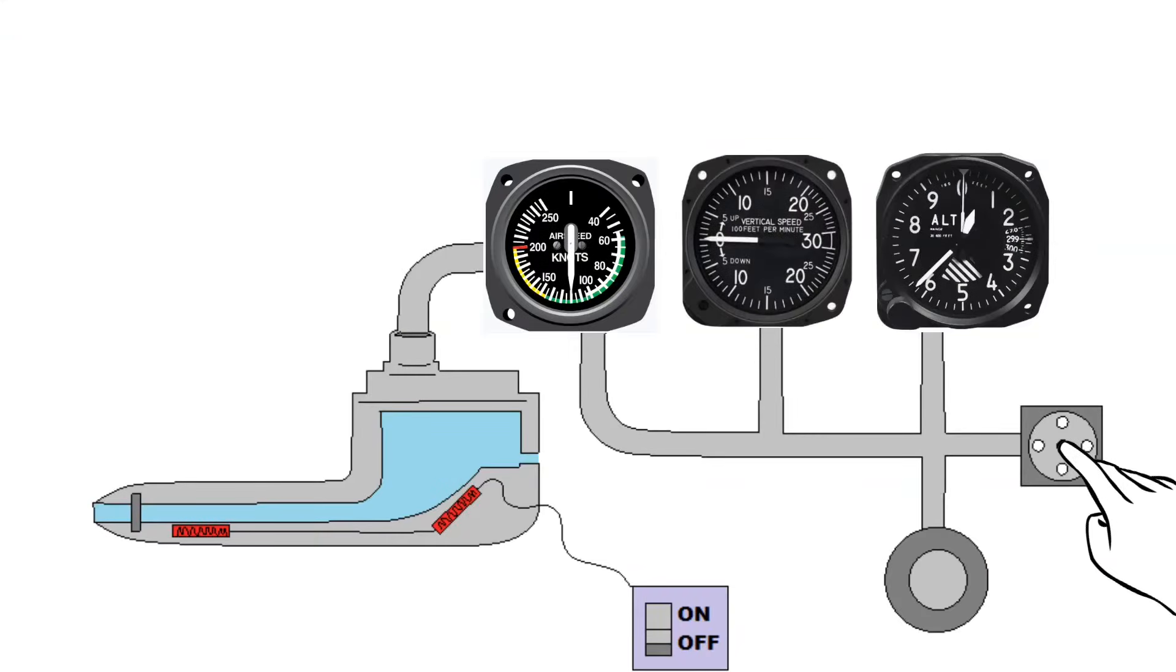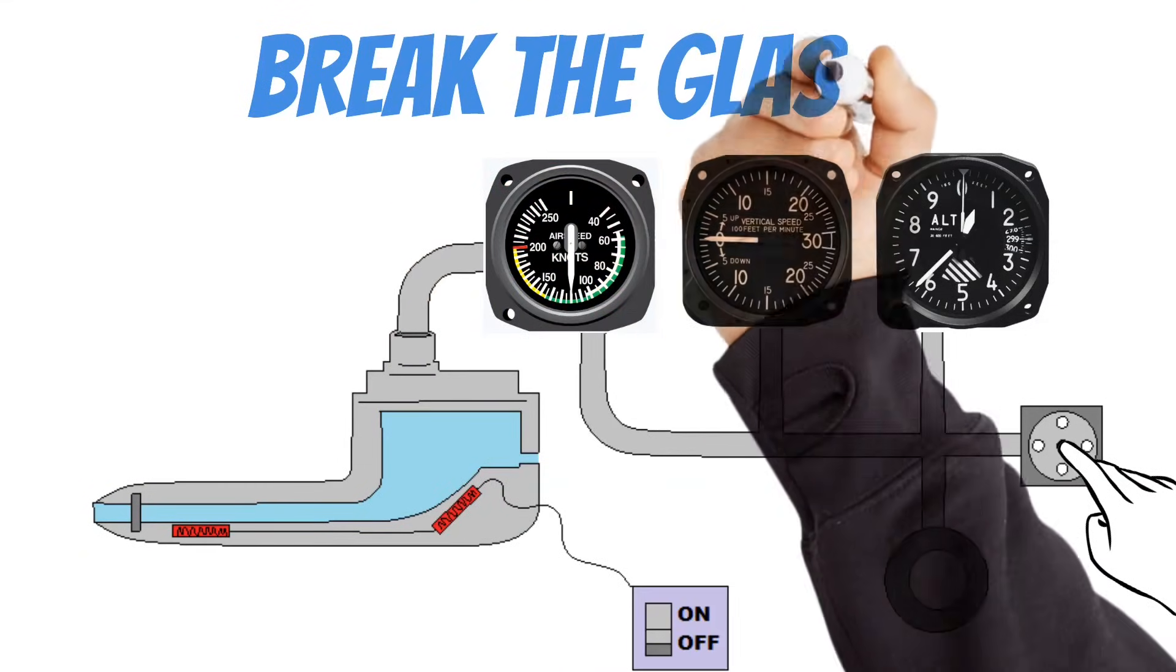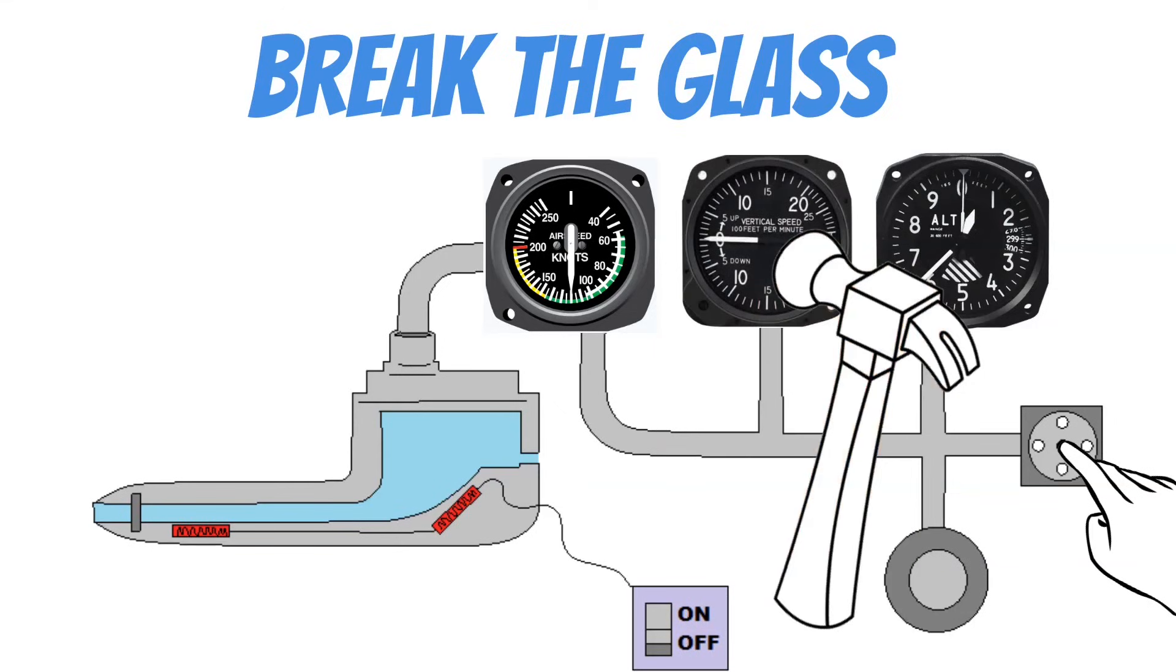Now, if you don't have an alternate static source, one thing you can do is you can break the glass on any of the static instruments. If you do this, I recommend breaking the glass on the vertical speed indicator. And that's because it's by far the least important of the instruments.